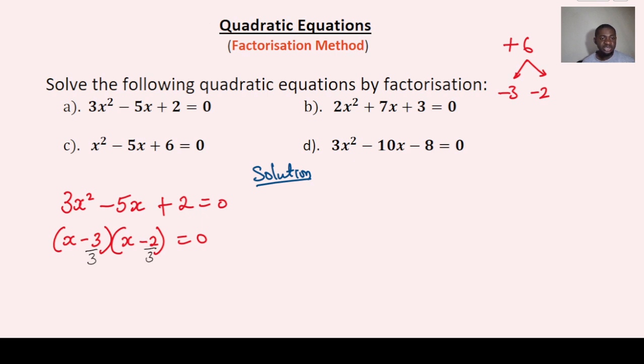Doing that, you can then say this becomes x - 1, and this is x - 2/3 equals to 0.